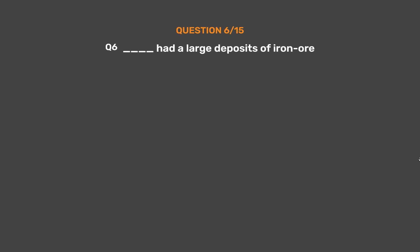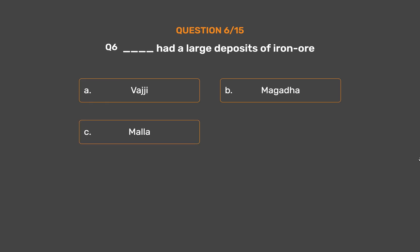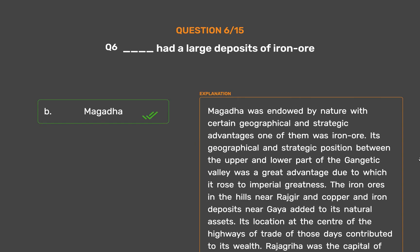Question No. 6. Which kingdom had large deposits of iron ore? Option A: Vajji. Option B: Magadha. Option C: Malla. Option D: Ujjaini. The correct answer is Option B: Magadha. Magadha was endowed by nature with certain geographical and strategic advantages, one of them being iron ore. Its geographical position between the upper and lower Gangetic Valley was a great advantage. The iron ores in the hills near Rajgir and copper and iron deposits near Gaya added to its natural assets. Rajagriha was the capital of Magadha.